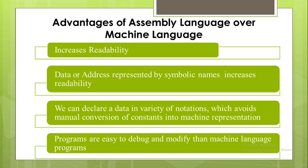Now we will see the advantages of assembly language over machine language. The first advantage is the assembly language program increases readability due to mnemonic operation codes instead of numeric operation codes. Instead of using numeric codes 01 or 02, you can specify mnemonic codes ADD or SUB respectively, which increases the readability of the program. The second advantage is that data or address is represented by symbolic names, which also increases readability.